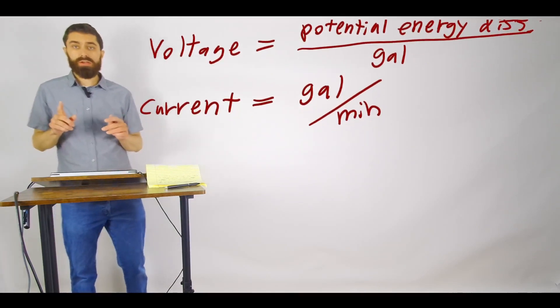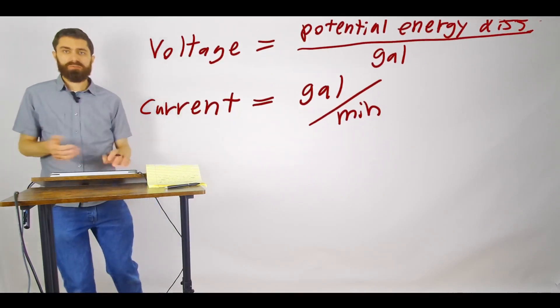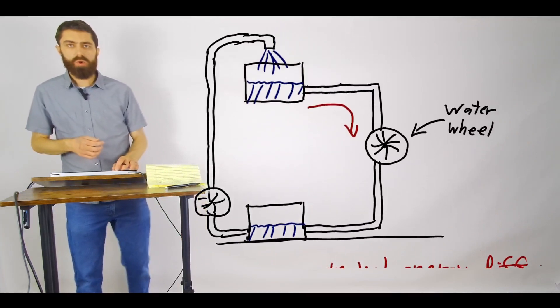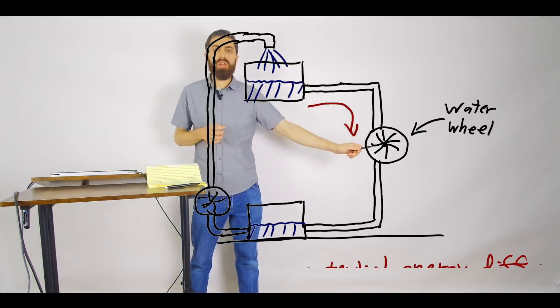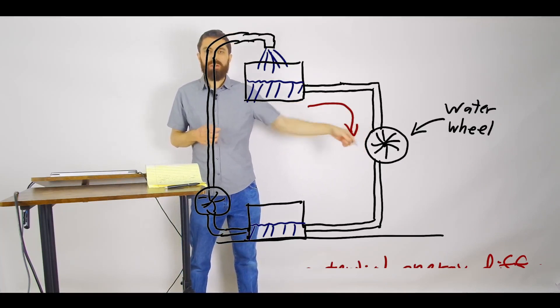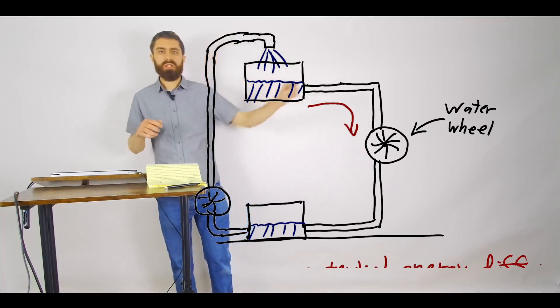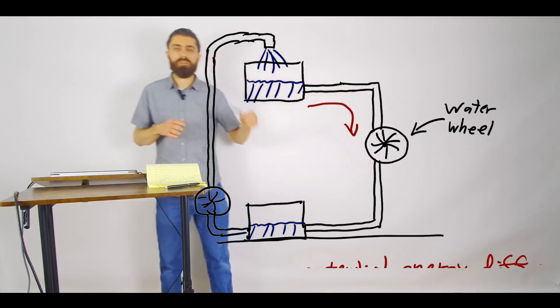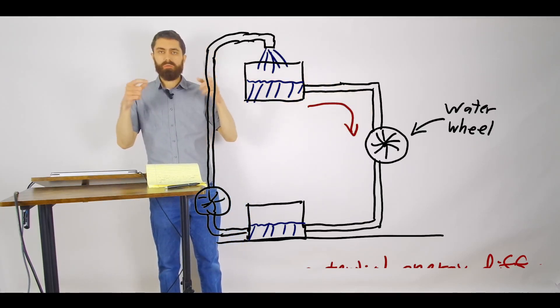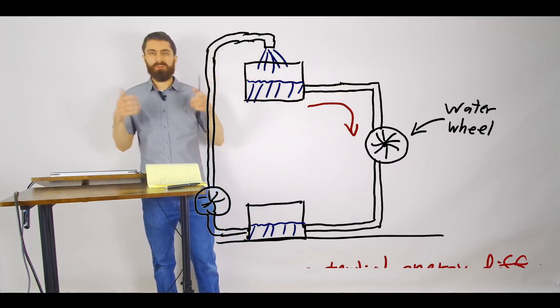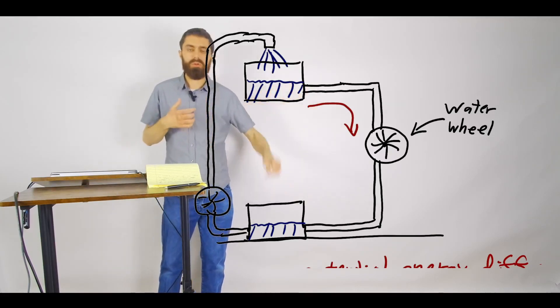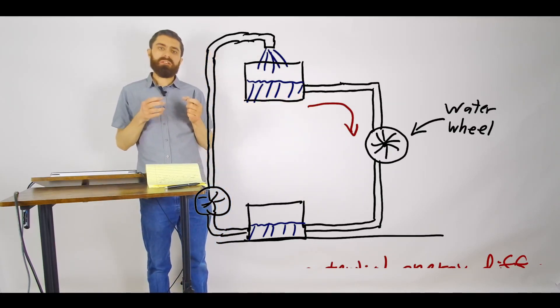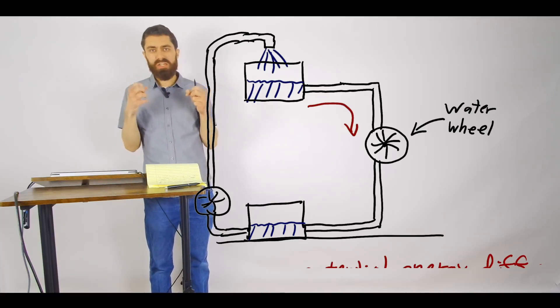And there's a third quantity called resistance. So as water is flowing through this water circuit here, there's going to be some mechanical friction as the water is flowing through. The bearings that that water wheel is on are not going to be perfect, and it's going to impede the flow. And if the bearings were really rusty, then it would probably provide a lot of resistance.